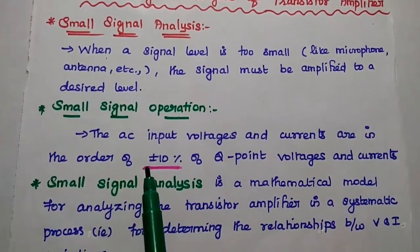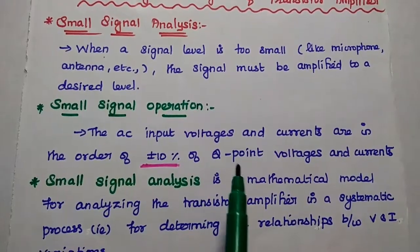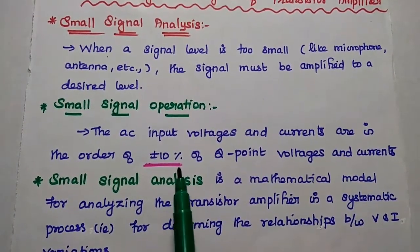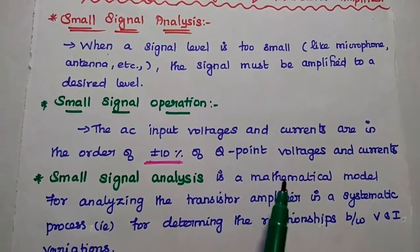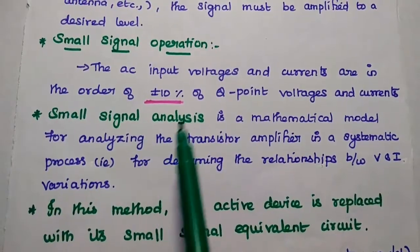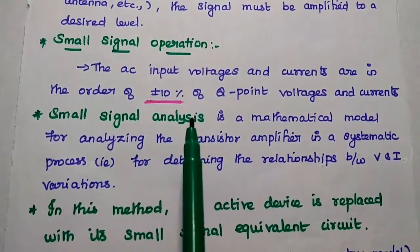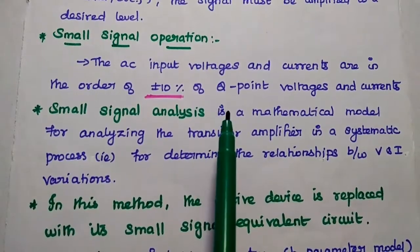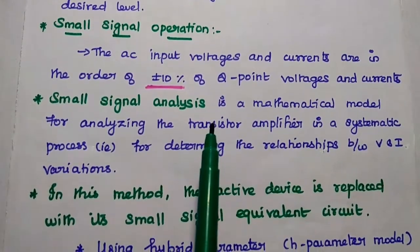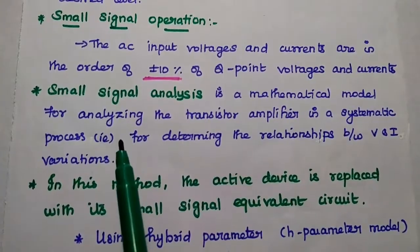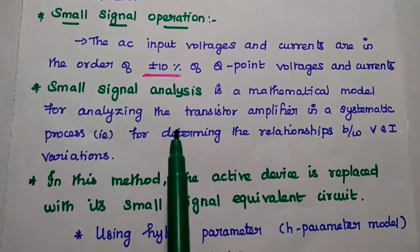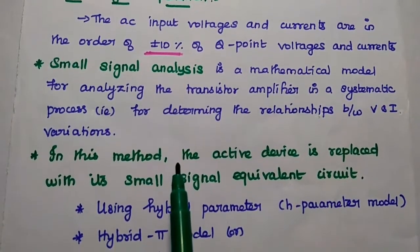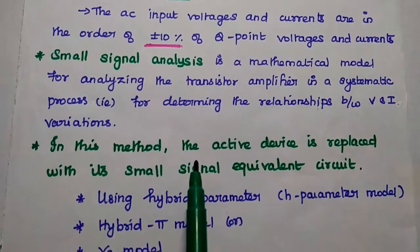In this small signal operation, the AC input voltages and currents are in the order of plus or minus 10 percent of the Q point voltages and currents. Whenever the input voltage and currents are in the order of plus or minus 10 percent of Q values, those are called small signal operations. Small signal analysis is a mathematical model for analyzing the transistor amplifier in a systematic process.